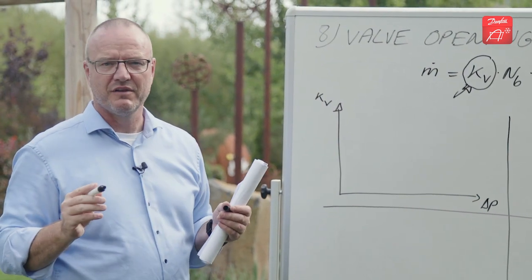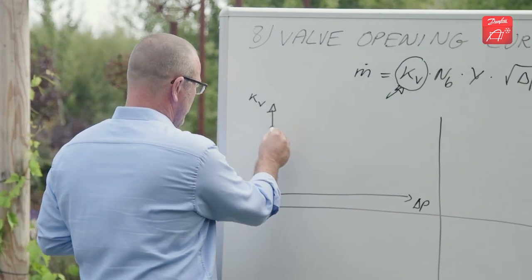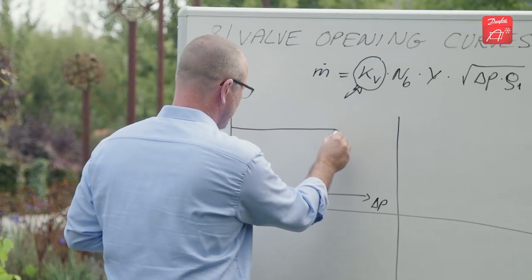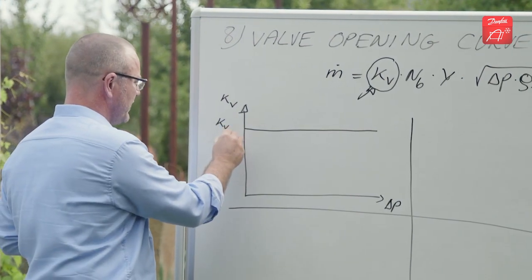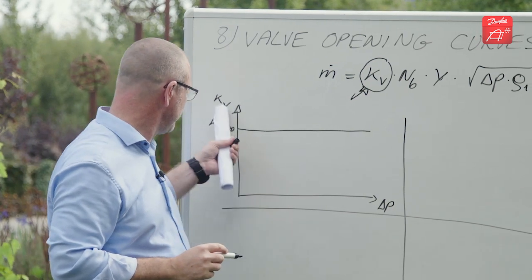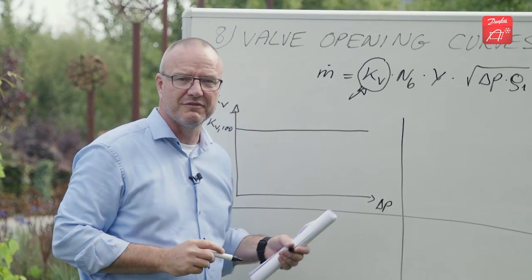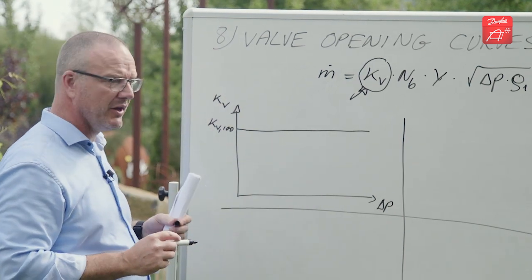If we start with the most simple valve types, that is the direct operated solenoids. When you open the valve you reach the fully open kV value immediately. The valve kV is not a function of the pressure drop across the valve. It's only a function of whether you have actually opened it or not.